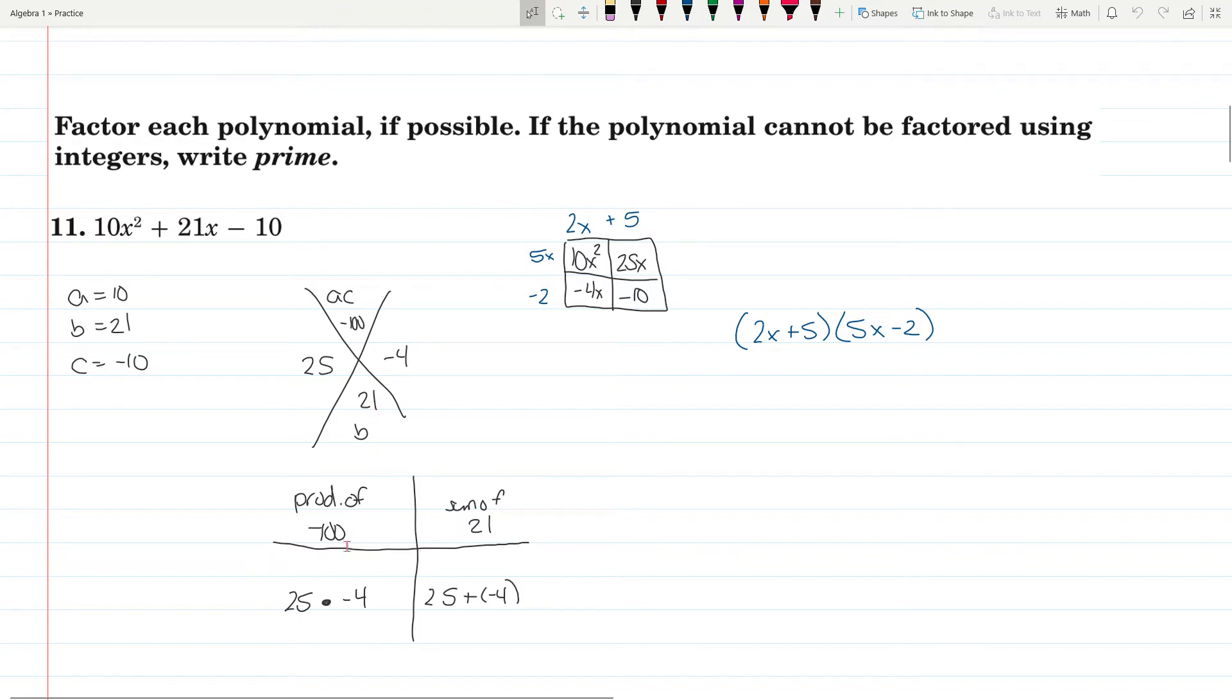We're looking for a product of negative 100 and the sum of 21. So we need a negative times a positive where the positive is going to be bigger. 25 times negative 4 gets us to negative 100, and 25 plus negative 4 gets us to 21. We put in our 25x and our negative 4x in the box. 10x squared and negative 4x gives GCF 2x. 25x and negative 10 is a positive 5. 10x squared with 25x is 5x. Negative 4x and negative 10 is negative 2. So the factoring is 2x plus 5 times 5x minus 2.